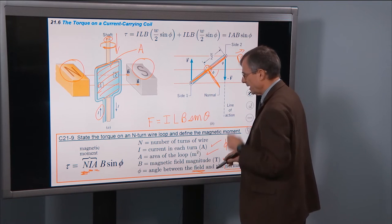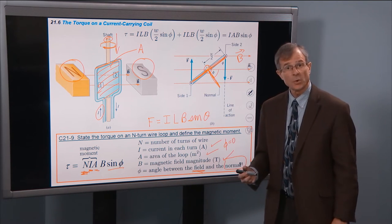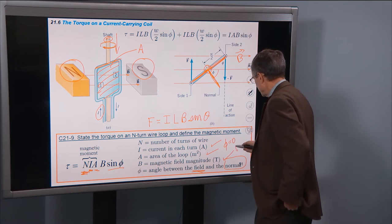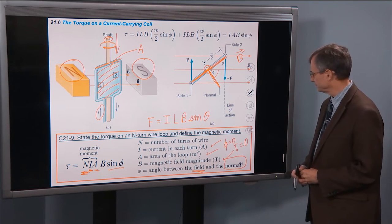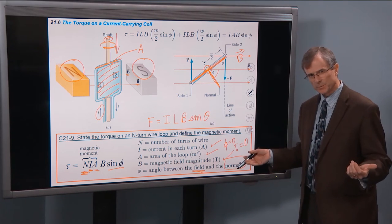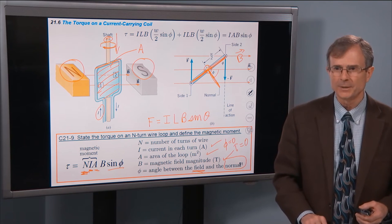So in that particular case, we'll have sin of 0 and that gives us no torque. So the torque on this coil is going to be 0 in that case. We're going to get maximum torque if Φ equals 90 degrees.